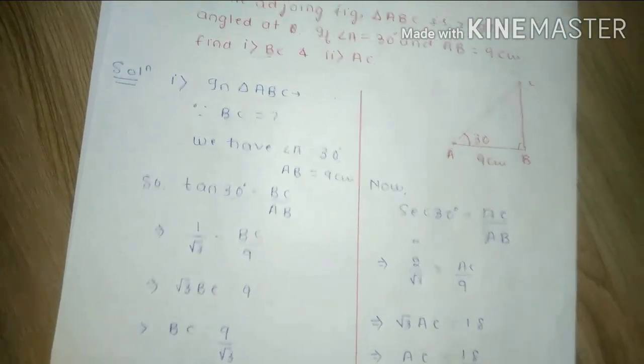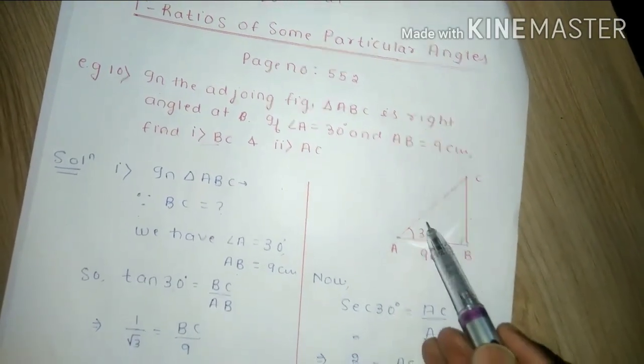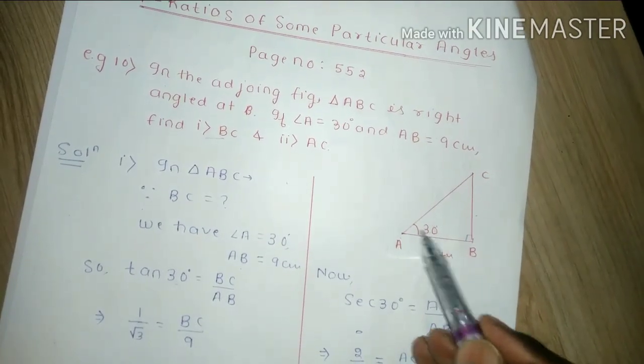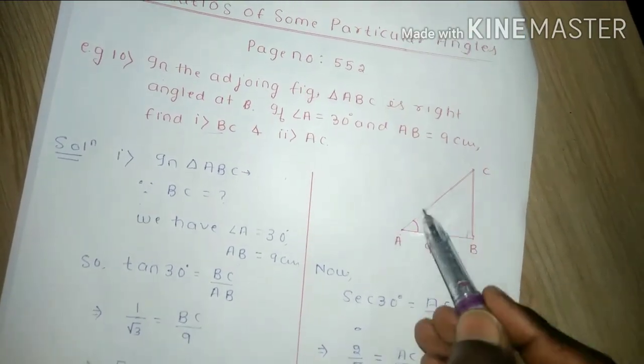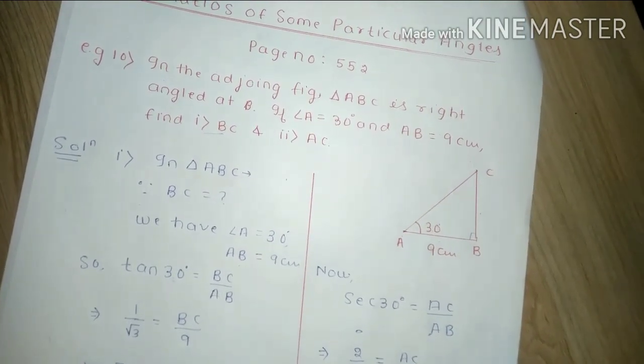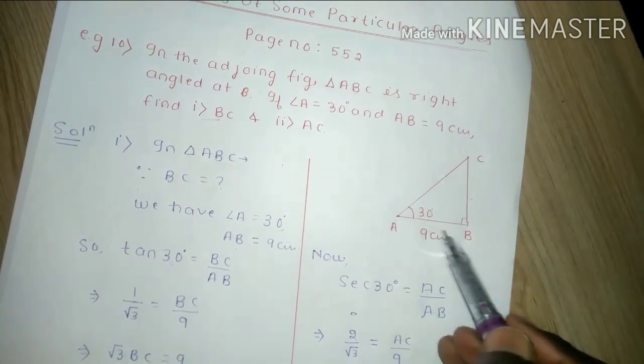Now we will solve the second part which we have asked, what will be AC. Now look at AC, what will be AC. AC is hypotenuse and AB is base.